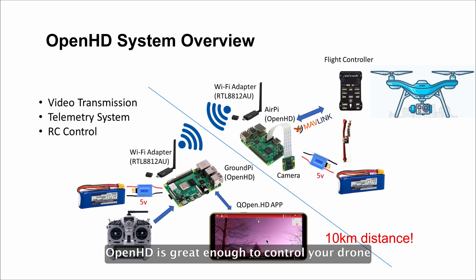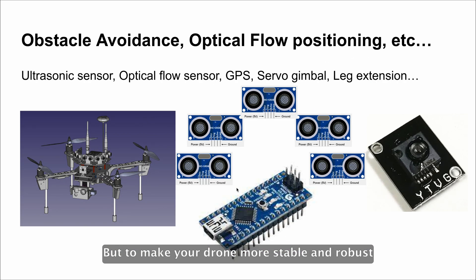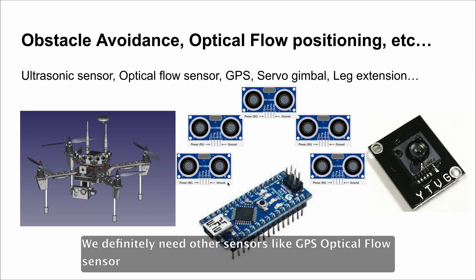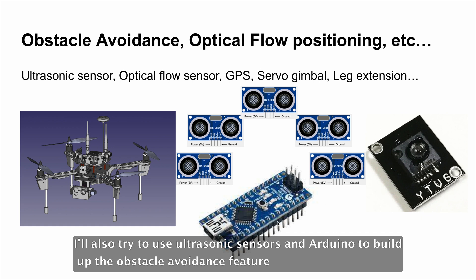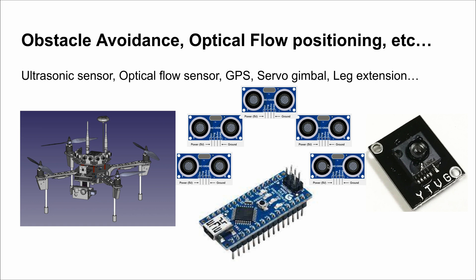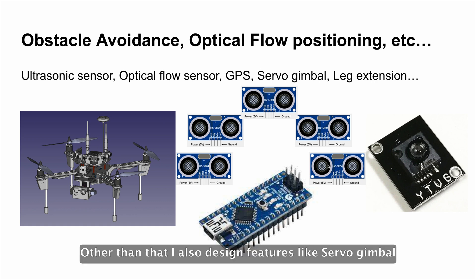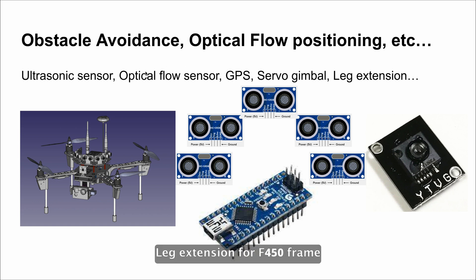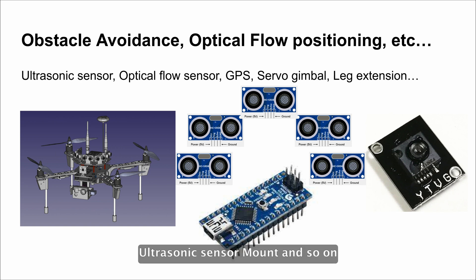OpenHD is great enough to control your drone, but to make your drone more stable and robust, we definitely need other sensors like GPS and an Optical Flow Sensor. I will also try to use ultrasonic sensors and Arduino to build an obstacle avoidance feature. Other than that, I also designed features like a servo gimbal, leg extensions for the F450 frame, a Raspberry Pi camera mount, and an ultrasonic sensor mount.